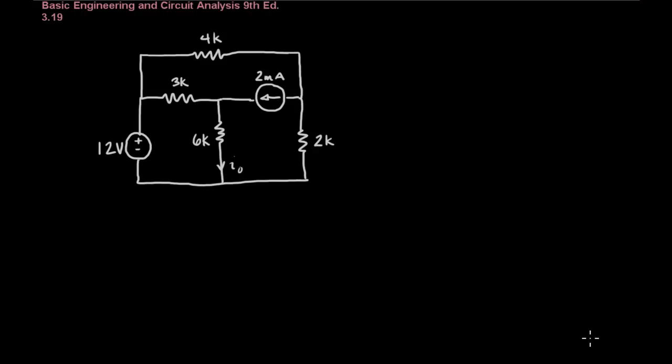Let's take a look at how to solve problem 319 from the homework and we're going to solve this a little bit differently. We're being asked to find I naught in this circuit but instead what we'll do is we'll actually solve the entire circuit meaning that we'll determine all of the node voltages and all of the branch currents.